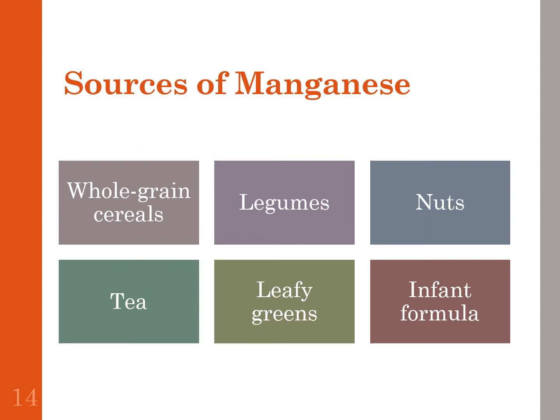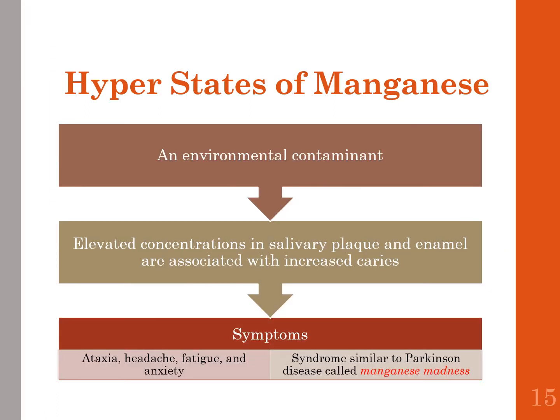The bioavailability of manganese is better from meats, milk, and eggs — people absorb it more readily from those sources even though those foods contain smaller amounts of manganese. As for hyper states, manganese is an environmental contaminant and we see elevated concentrations in salivary plaque and enamel associated with increased caries — though associated does not mean it causes those cavities.